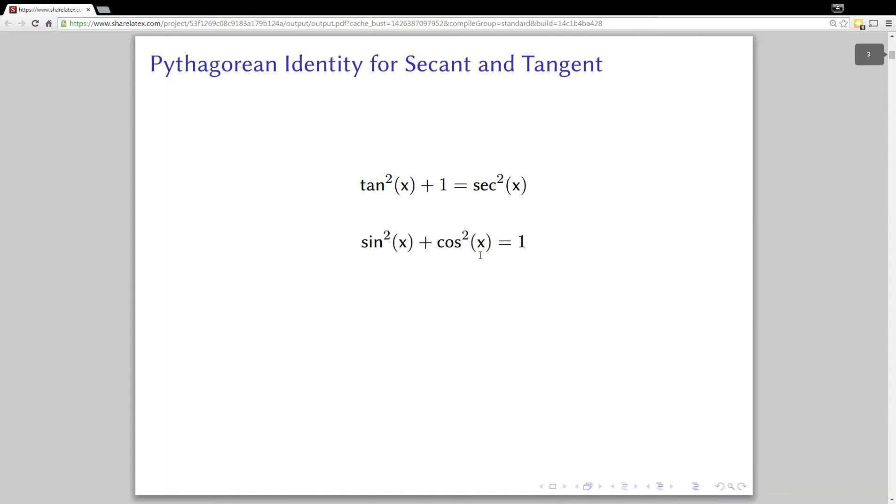Sine squared plus cosine squared x equals 1, that's one that everybody should have memorized. You can get this Pythagorean identity for tangent and secant from the sine squared plus cosine squared one. How you do that is just divide each term in the sine squared plus cosine squared by cosine squared, and then sine squared over cosine squared would be tangent.